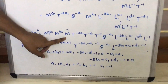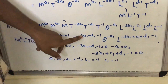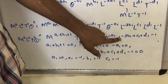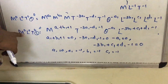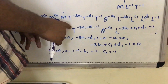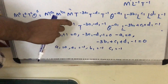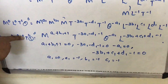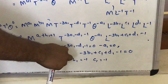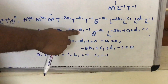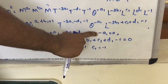Combining: M raised to A1 plus B1 plus 1, T raised to minus 3A1 minus D1 minus 1, theta raised to minus A1, and L raised to minus 3B1 plus C1 plus D1 minus 1. Since it is non-dimensional, each of these must equal zero. So we set A1 plus B1 plus 1 equal to 0, minus 3B1 plus C1 plus D1 minus 1 equal to 0, minus 3A1 minus D1 minus 1 equal to 0, and minus A1 equal to 0.